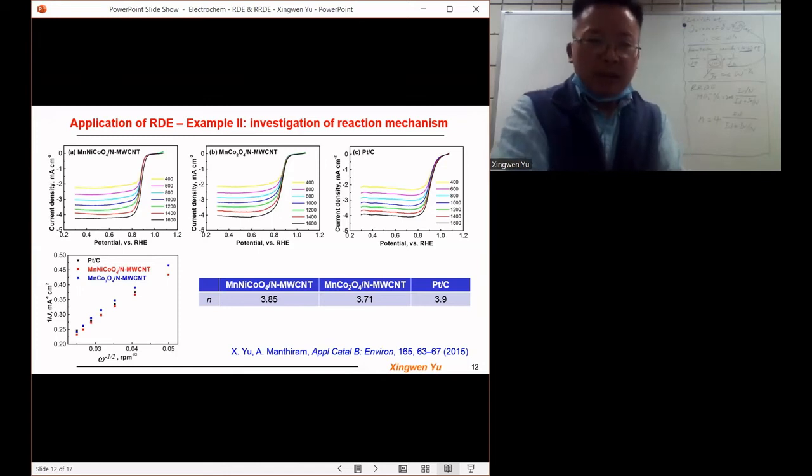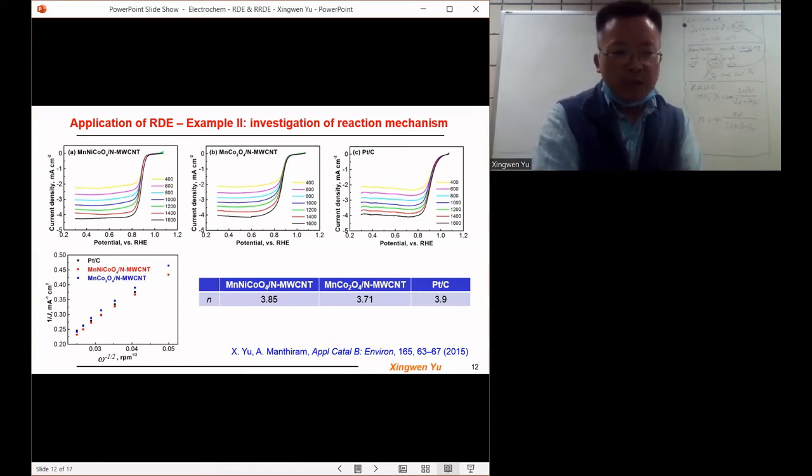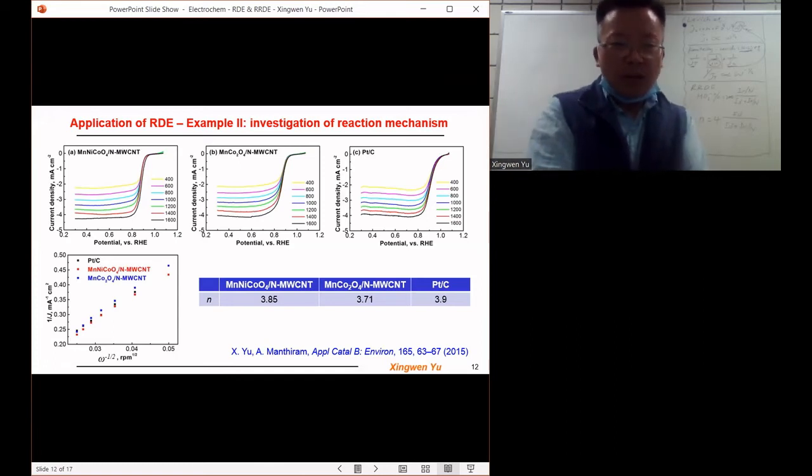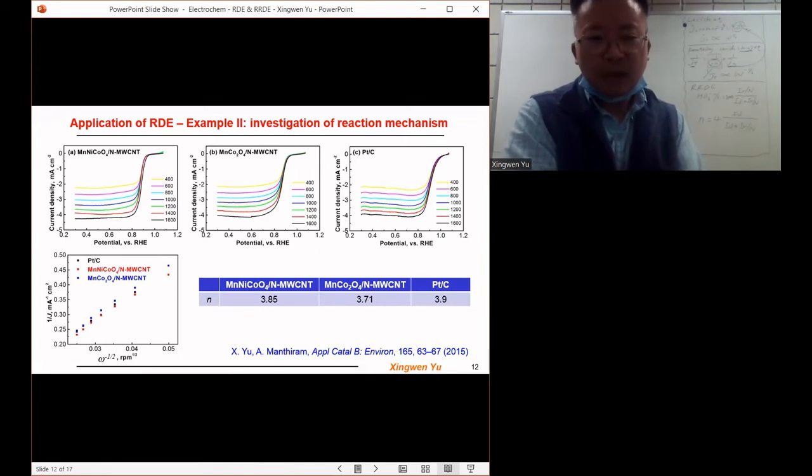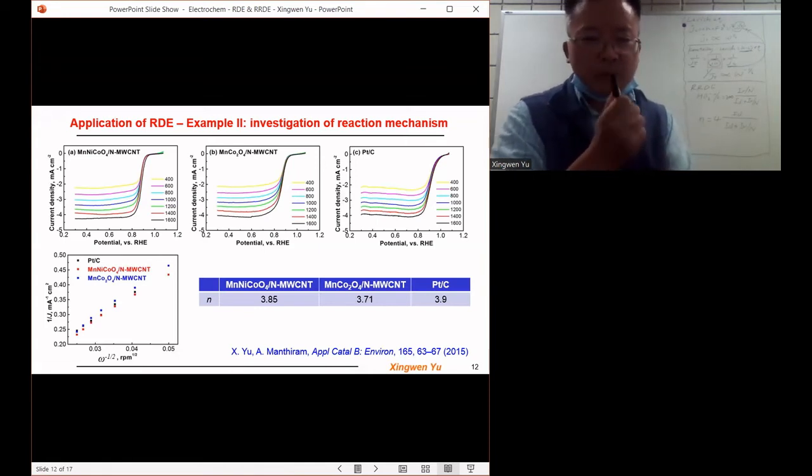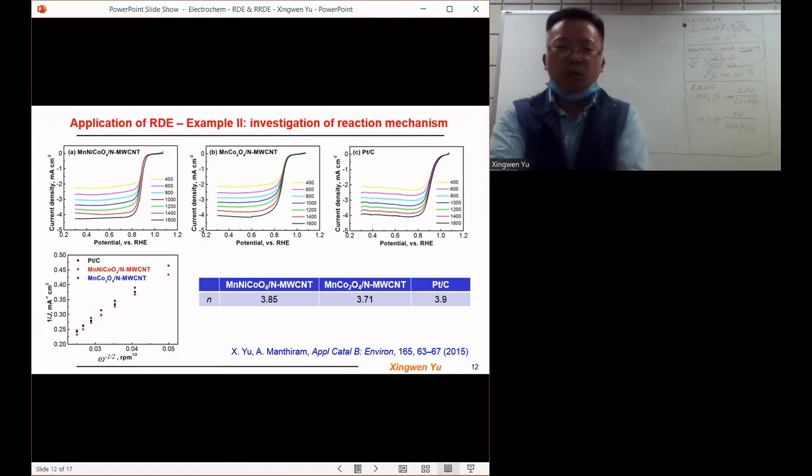So the two catalysts I developed are the magnesium nickel cobalt oxide supported on the nitrogen-doped multi-wall carbon nanotube; the other one is the binary transition metal system, magnesium cobalt without the nickel. So I also compared these two catalysts with the performance of the commercial platinum.